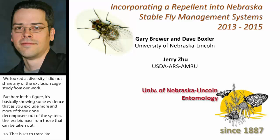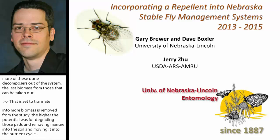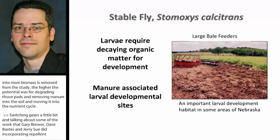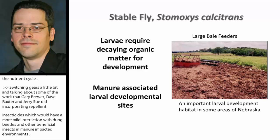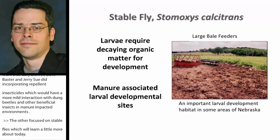Switching gears to the work that Gary Brewer, Dave Boxler, and Jerry Zhu have been doing: they've been looking at incorporating repellent insecticides said to have a milder interaction with dung beetles and other beneficial insects in manure-impacted environments. They've been focused on stable flies, which affect cattle productivity as they take multiple blood meals per day, and their protruding mouthparts deliver very painful bites to cattle, usually on the lower legs and ankles.